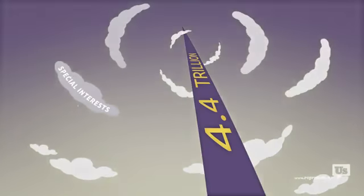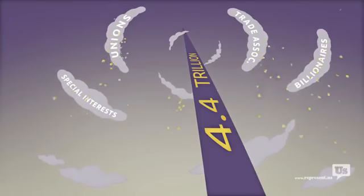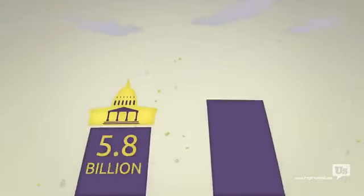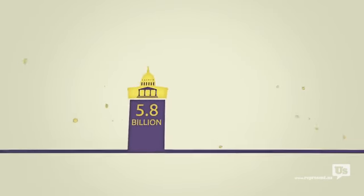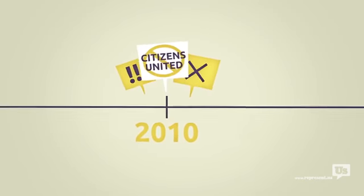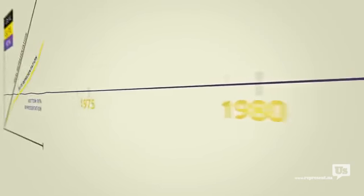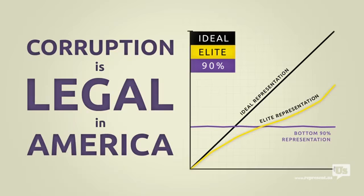Never mind every other special interest, every union, every trade association, and every billionaire. Every single one of them can use their money to buy political influence. You know, there's this idea out there that this only became a problem after the Supreme Court's Citizens United decision in 2010. But the data goes back almost 40 years, and the results are clear. Corruption is legal in America. And as long as it is, anyone who can spend money to buy political influence will.